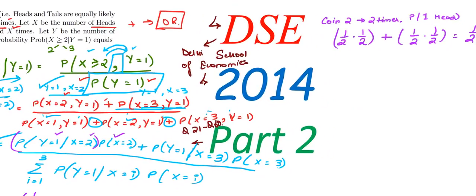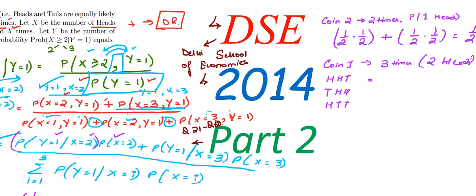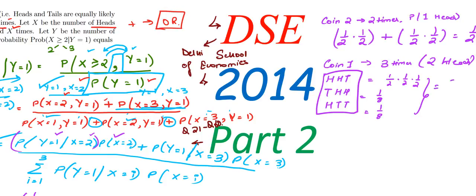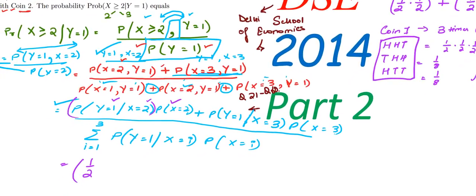This is multiplied by P(X=2), which means two heads in coin 1 tossed three times. The possible cases are: HHT, THH, and HTH. Each has probability (1/2)³ = 1/8, and there are three such cases, giving 3/8. So P(X=2) = 3/8, and this term is (1/2) × (3/8).